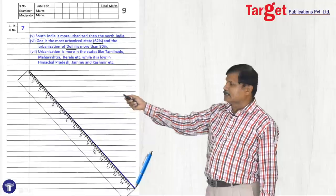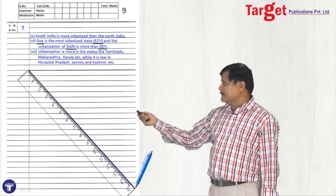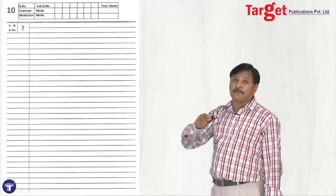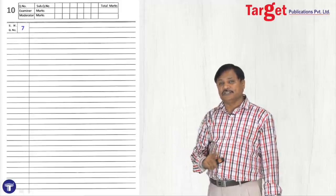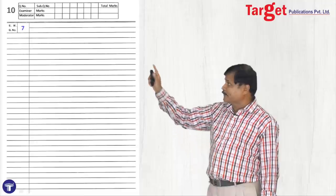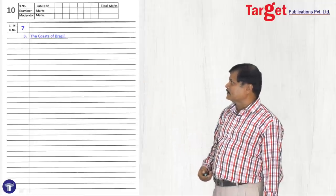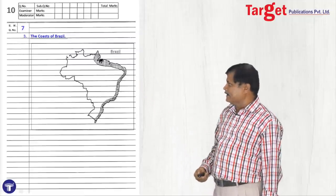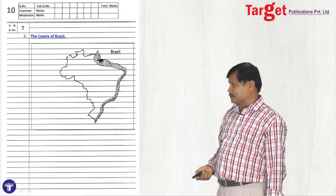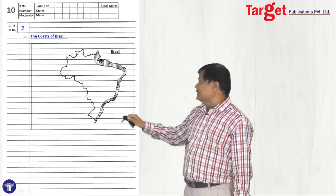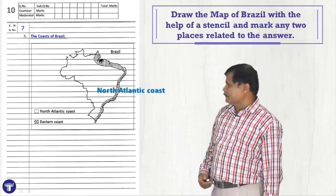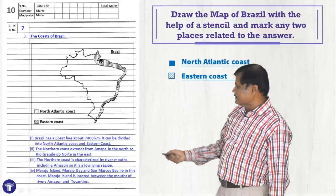Going to the next page, I immediately wrote the main question number again. Try to underline important keywords — not the full sentence, but words, years, digits, or places. Then draw the line and cancel the unused space. You may wonder why I did not start the next question in the remaining space — because a map would not fit there. So I cancelled that space and went to the next question. For question 3 about the coast of Brazil, I wrote the title 'coast of Brazil', drew Brazil's map, mentioned the North Atlantic coast and the East coast, showed them in the index, and answered the question.